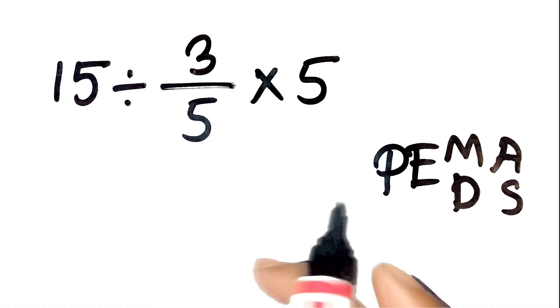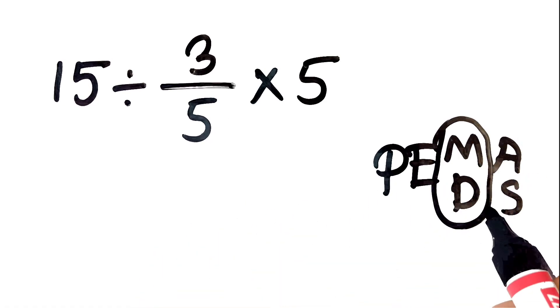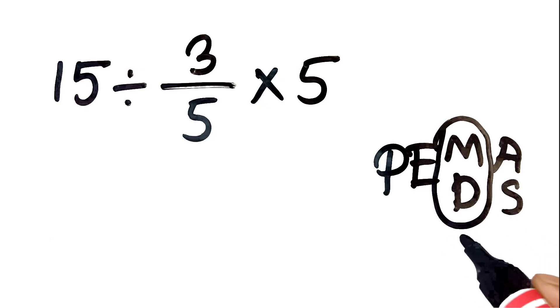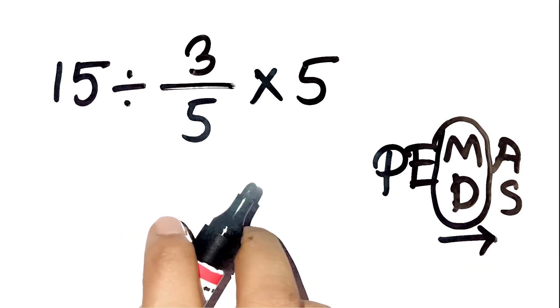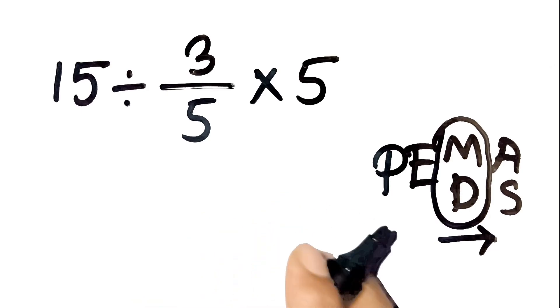But here's the kicker. Multiplication and division are on the same level, so we process them left to right. Yes, left to right. Not just canceling numbers magically.